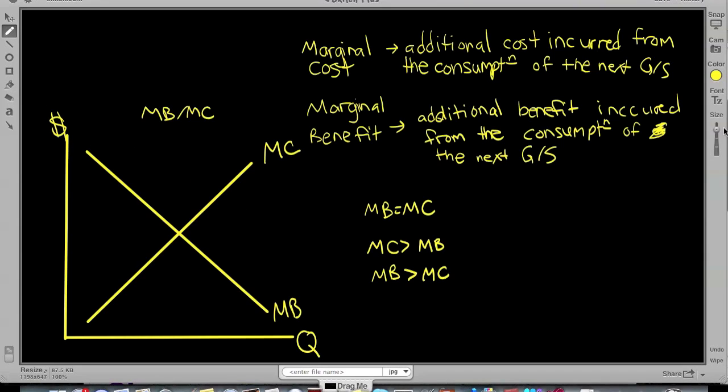So market equilibrium is going to be over here where the marginal benefit equals the marginal cost. So this is the equilibrium quantity and this is the ideal equilibrium price. I'll put a little step there.